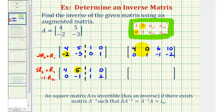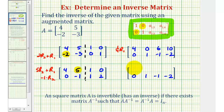For the last step, we want the first element in row one to be positive one, so we replace row one with one-fourth times row one. The second row stays the same. For row one: one-fourth times four is one; one-fourth times zero is zero; one-fourth times six is six-fourths or three-halves; and one-fourth times ten is ten-fourths or five-halves.